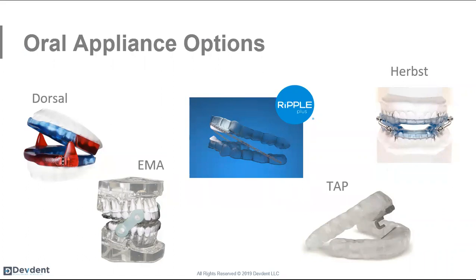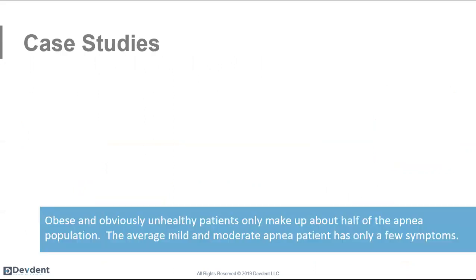Then you're going to treat them. There are lots of appliance options — we spend about two and a half hours at our courses going over appliance selection, titration, bite and position benefits, which ones are covered by Medicare, which are ideal for patients with TMD or very few teeth, and what edentulous treatment options exist. There's a lot to decide when it comes to oral appliances, and we cover it in great detail at our courses.